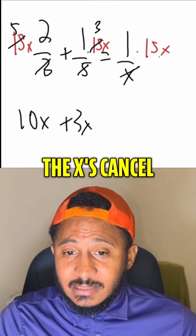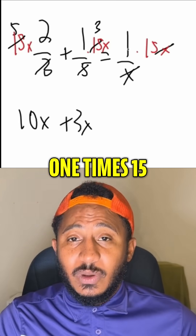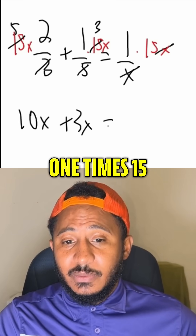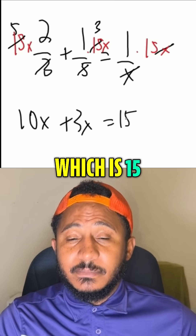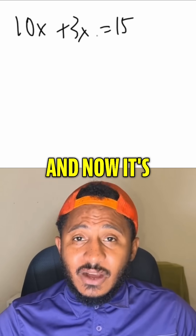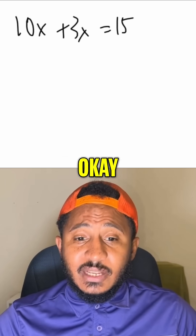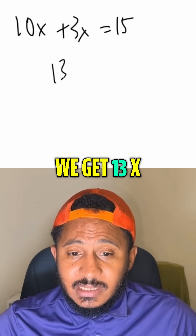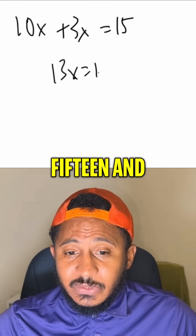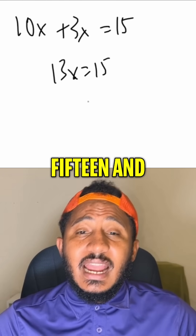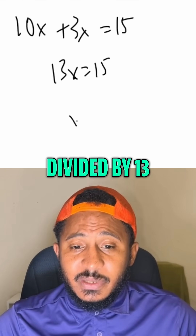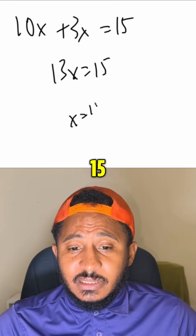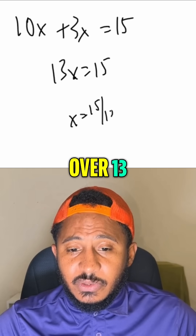And here, the x's cancel, and so we get 1 times 15, which is 15. And now it's a linear equation. So combining like terms, we get 13x equals 15.